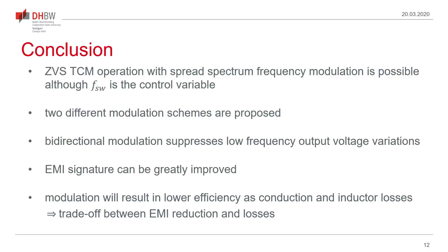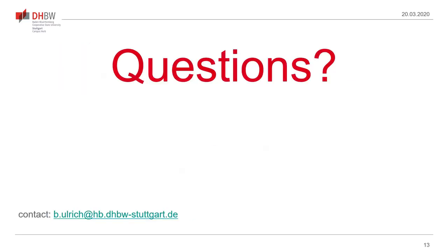In conclusion: zero voltage switching operation is also possible with spread spectrum frequency modulation, even though switching frequency is the control variable in a triangular current mode converter. Two modulation schemes were proposed, and the bidirectional modulation scheme was most favorable as it suppresses low-frequency output voltage variations. The EMI signature of the converter can be greatly improved, as shown by measurements reducing combined noise voltage as well as common mode and differential mode noise. However, modulation generally results in lower efficiency as conduction and inductor losses increase, so a trade-off between EMI reduction and losses must be taken into account. For questions, please write an email at the address shown.